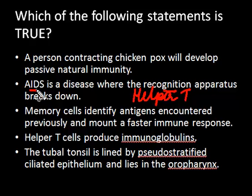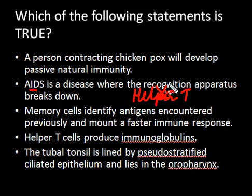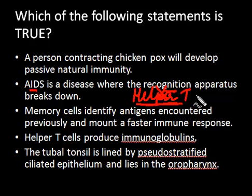AIDS is a condition where the virus attacks the immune system and knocks off the helper T cells. The recognition apparatus is functioning fine. It's just that the immune system is compromised, because if you don't have helper T cells, then cloning cannot occur and the other immune cells cannot carry out their functions.